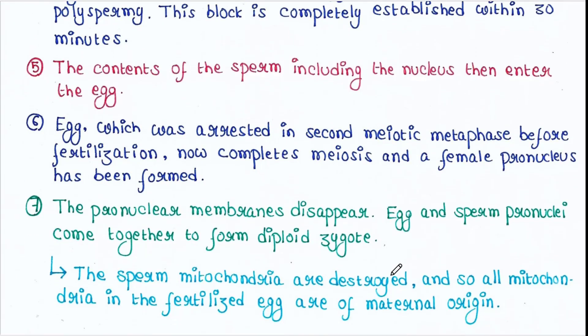The sperm mitochondria are destroyed in the female egg cytoplasm. And so all mitochondria in the fertilized egg are of maternal origin. All mitochondria in the zygote will come from egg cytoplasm. So this is all about today's lecture.